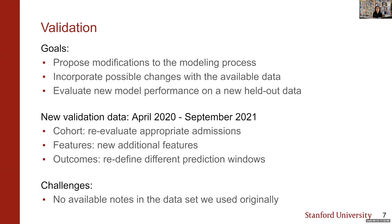We acquired new validation data from April 2020 to September 2021, not used in original model development. Key outcomes from this process include: redefining the cohort to identify patient subgroups that may not be appropriate for the prediction model; identifying new structured features to add; and noting that information in clinical notes not easily available in structured data could be considered in future development. We encountered a challenge in the STARR version we used — note text wasn't available, only note timestamps.